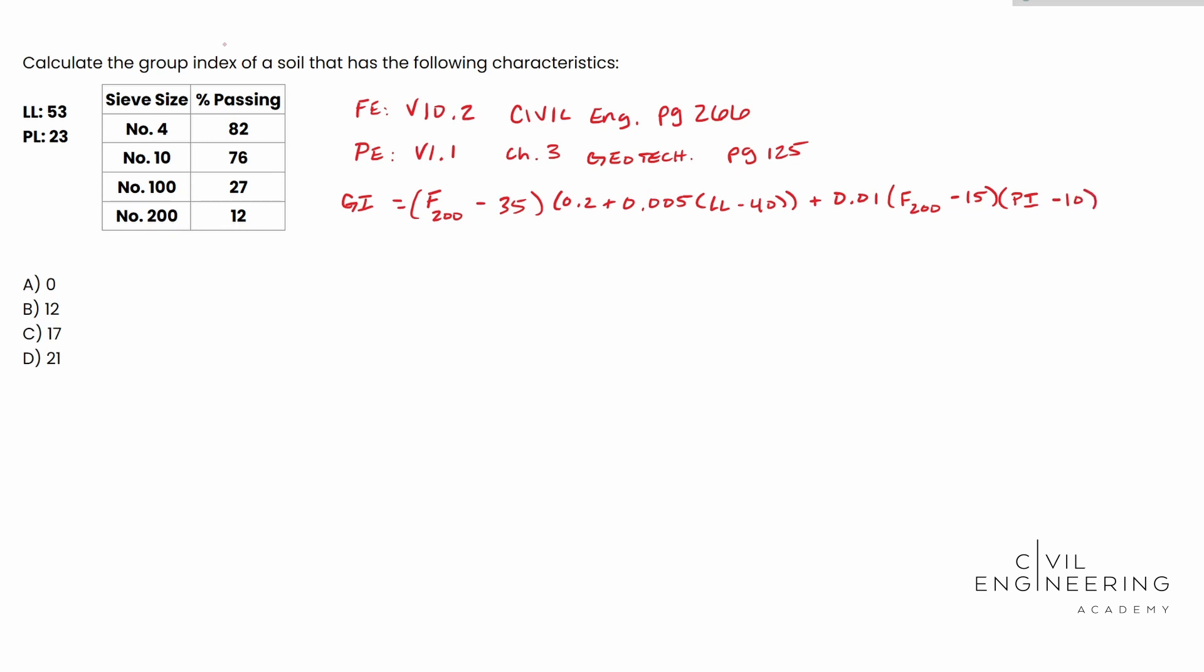All right. So an earful right there, but it's actually simpler than you think. It's just plug and chug. And we're basically given everything that we really need. What we need to do is solve for the PI, that's the plasticity index. And PI, this is a good thing to memorize here, PI is your liquid limit minus your plastic limit, so PL. And this is going to be equal to 53 minus 23. So that's the numbers that were given to us in the problem. This is going to be 30. So that's your PI there that we plug in.